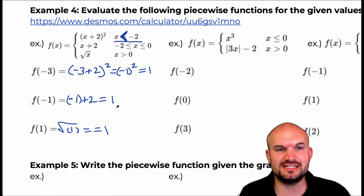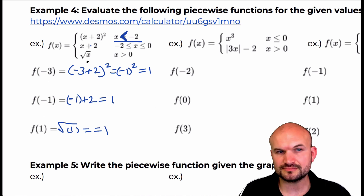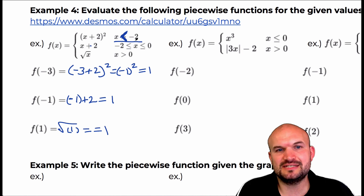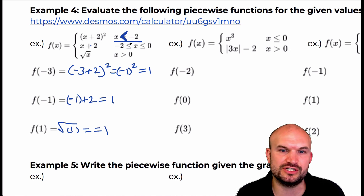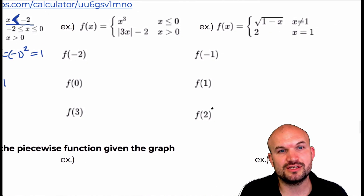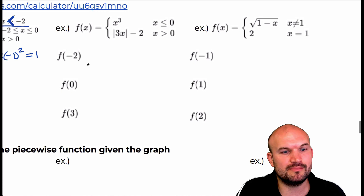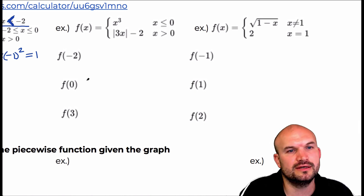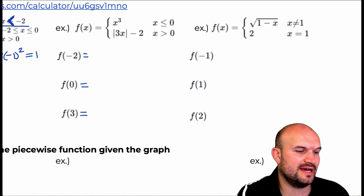The biggest mistake I see students make is they'll take one of these input values and plug it into all of them. That doesn't make sense because the restrictions tell us when each equation is going to be true for the given piecewise function. Let's take a look at the next example. We have negative two, zero, and three, so let's go ahead and take a look at that.